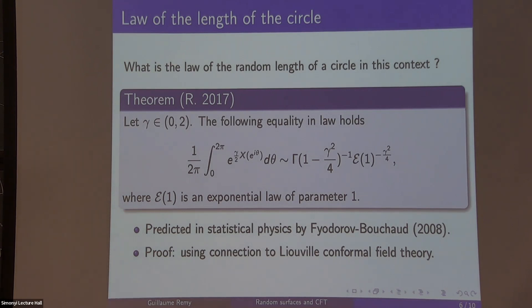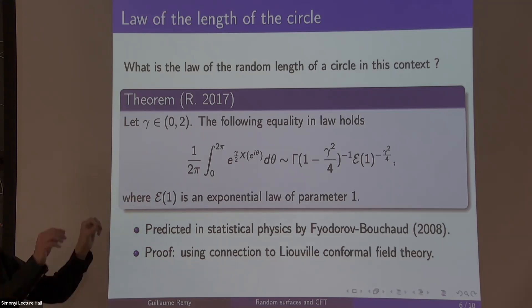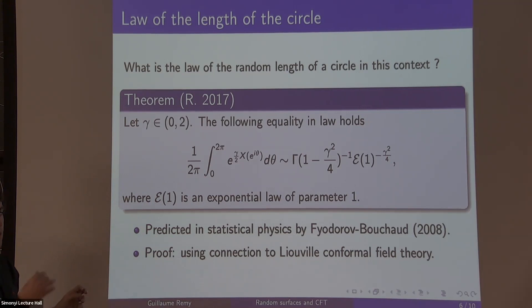You didn't mention any law for the area. Is that because... If you condition on boundary length, so here, if you condition on the boundary being one, the area follows some gamma distribution. Do you take multiple circles and compute their joint distribution? The most general thing we've done is take a circle and cut it into arcs and have joint laws of arcs and the area.